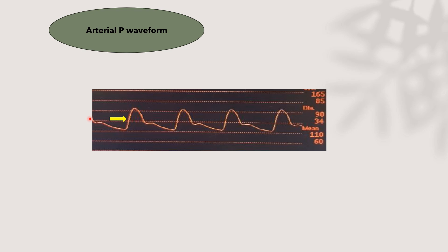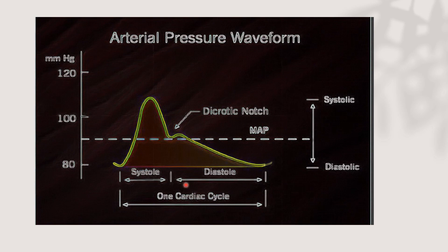The arterial pressure waveform is the second trigger, and the systolic upstroke is the site of sensing. The arterial pressure waveform is divided into systole and diastole, representing one cardiac cycle. In systole, we see the dicrotic notch, which represents closure of the aortic valve, and the area under the curve represents mean arterial pressure — responsible for organ perfusion.